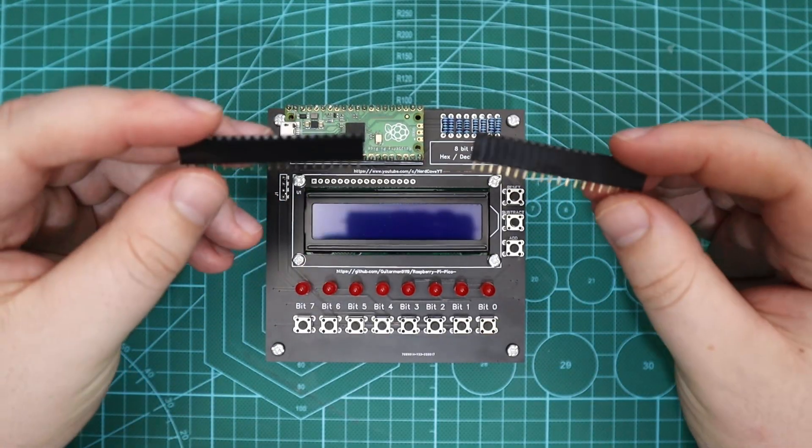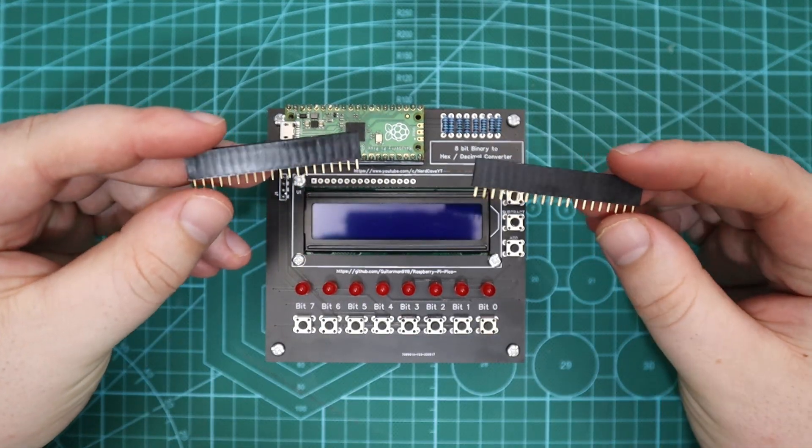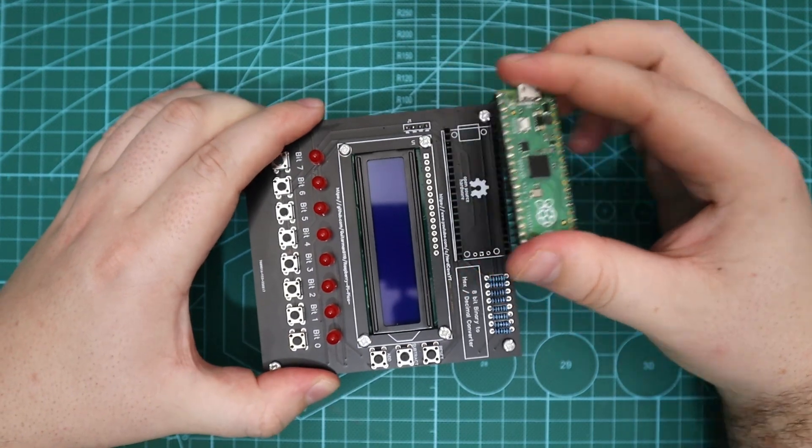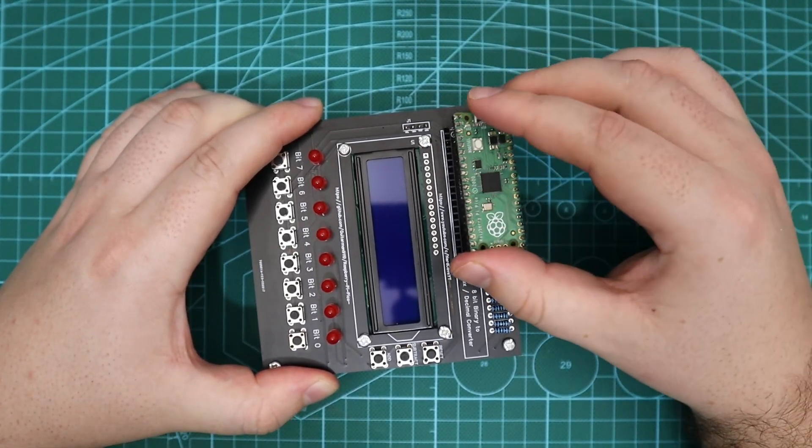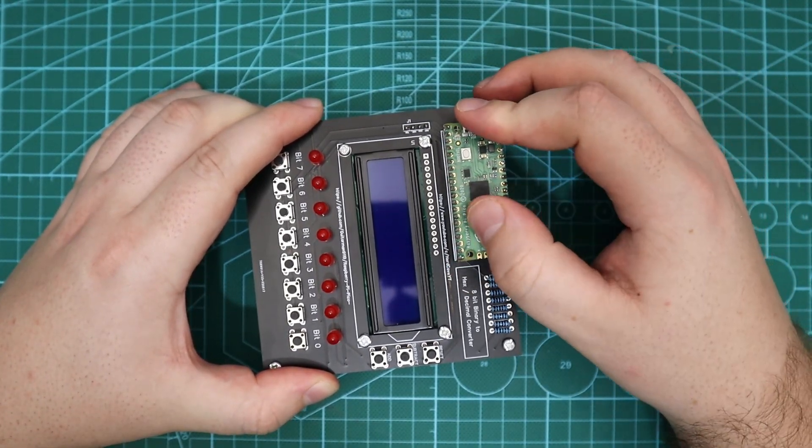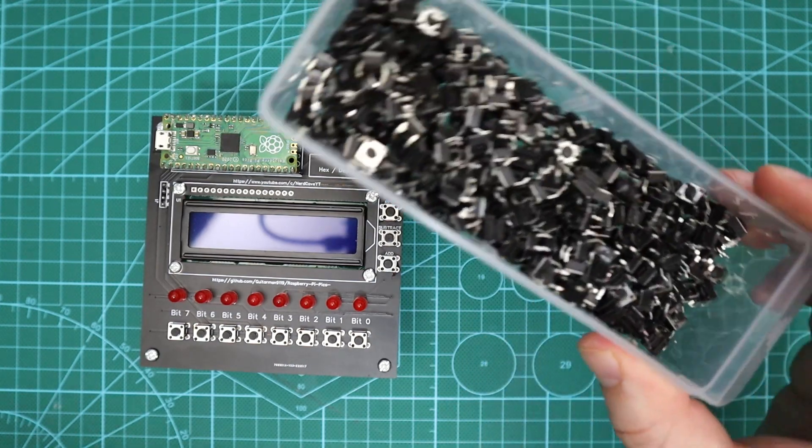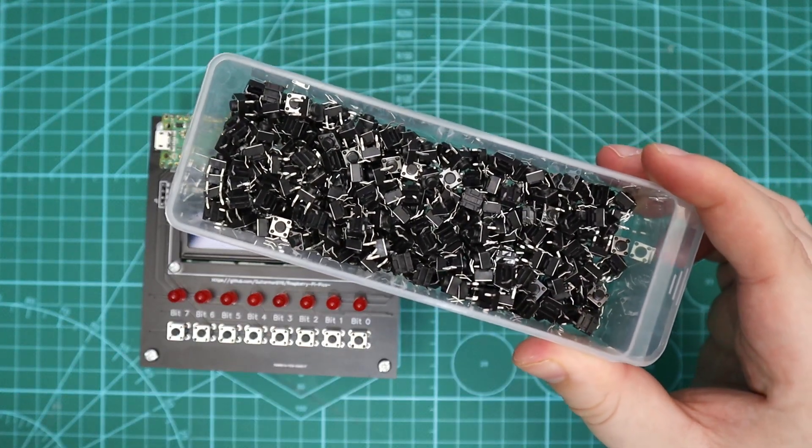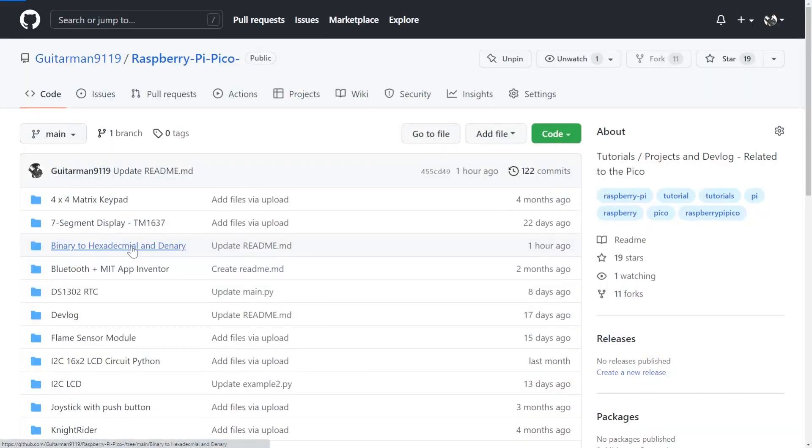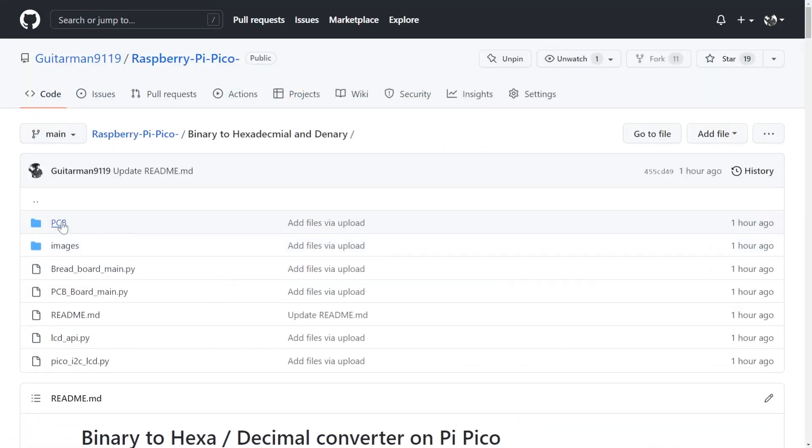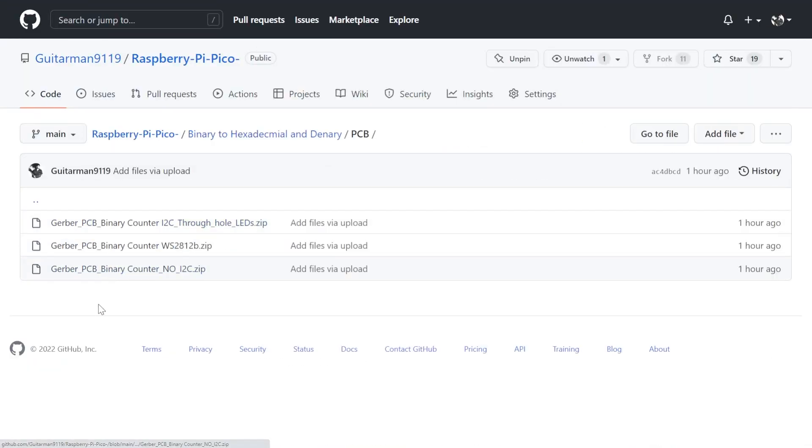If you have ordered the PCB you will need to get the female header pins if you want to unplug your Pico from the PCB and 4 header pins to connect the LCD. We will also be using the 6 by 6 tactile push buttons instead of the 12 by 12 millimeter push buttons. The PCB is available to download in my GitHub repository with all the code.